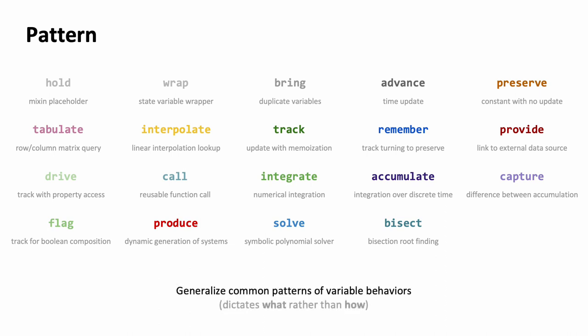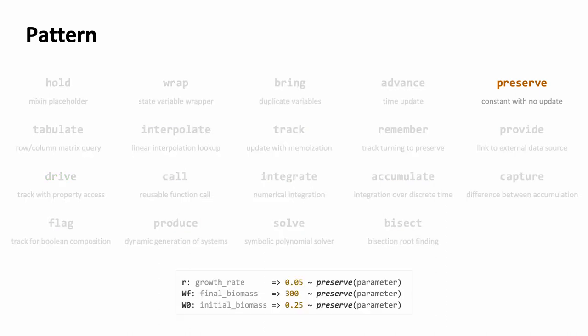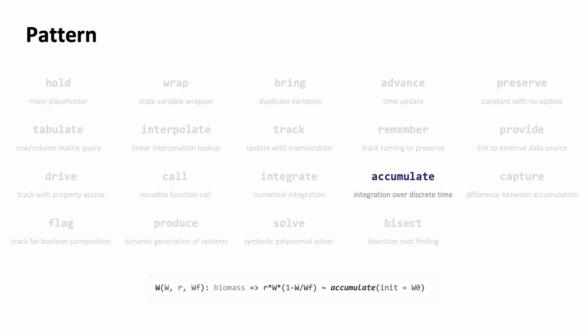There are currently 19 patterns implemented. We already saw a parameter pattern making a constant variable constant. It is often used for model parameters. Accumulate is essentially doing Euler integration. We saw this with the biomass accumulation.